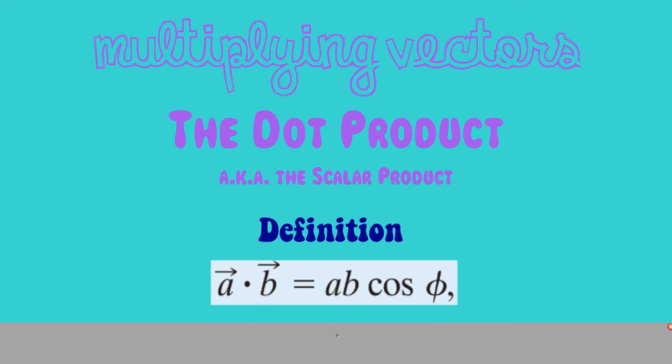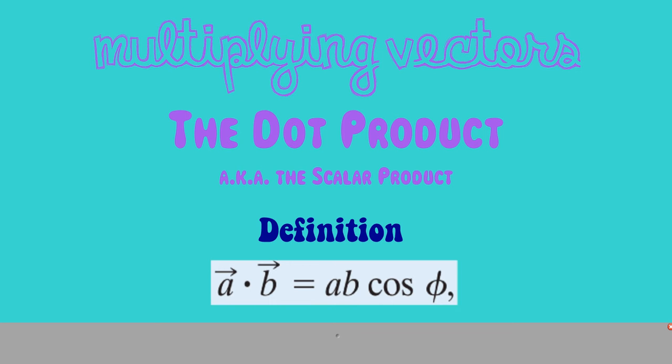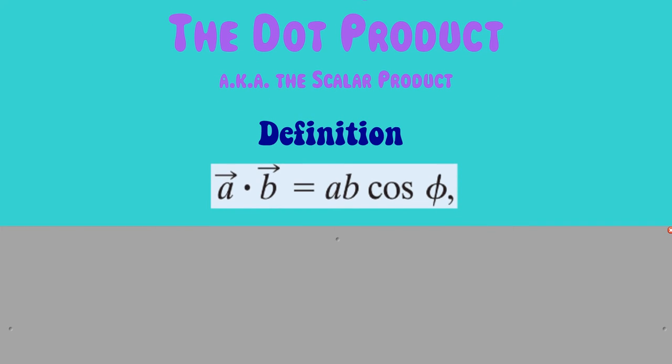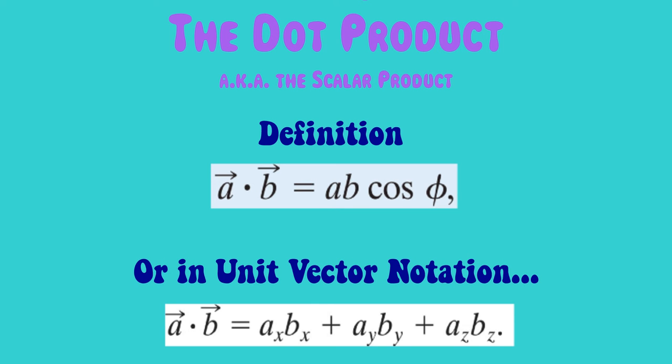For starters, let's learn the definition. The definition comes in the form of an equation where we have two vectors, a and b, and so a dot b is equal to the magnitude of a times the magnitude of b times the cosine of the angle that's between those two vectors. That's what phi stands for here. Also, we can perform the dot product in unit vector notation saying that a dot b is equal to the multiplication of the x component of a and b plus the product of the y components of a and b plus the product of the z components of a and b.